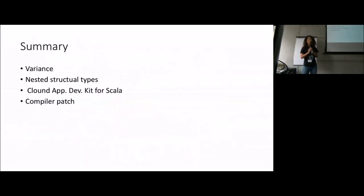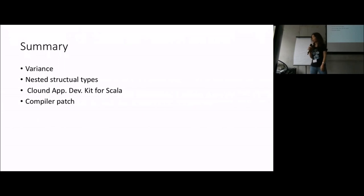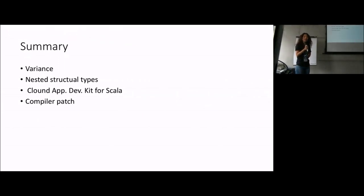This is the end of my talk. To summarize: I recapped what variance is, nested structural types, GLB, and LUB, and I showed how we use these ideas in our application to represent database objects in a type-safe way. Thank you. Any questions?